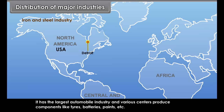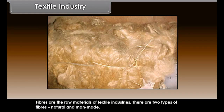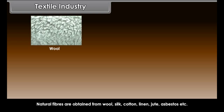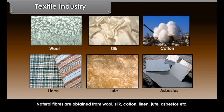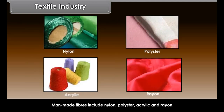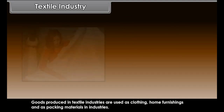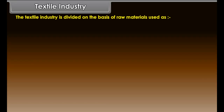Detroit has developed industrial complexes of iron, steel, and allied industries and has the largest automobile industry. Fibers are the raw materials of textile industries. There are two types: natural fibers obtained from wool, silk, cotton, linen, jute, asbestos, etc., and man-made fibers including nylon, polyester, acrylic, and rayon. Goods produced in textile industries are used as clothing, home furnishings, and packing materials in industries.